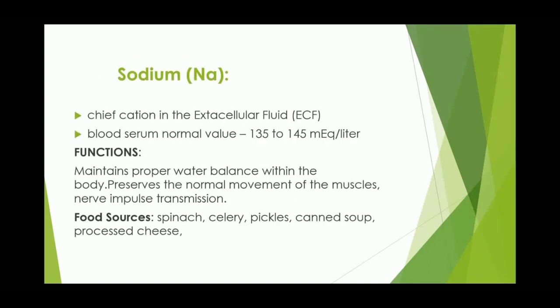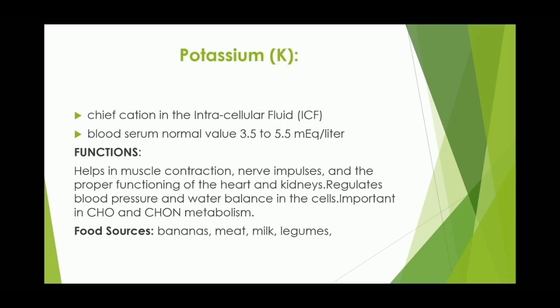Sodium: chief cation in the extracellular fluid. Blood serum normal value is 135–145 mEq/L. Functions: maintains proper water balance within the body, preserves normal movement of muscles, and nerve impulse transmission. Food sources: spinach, celery, pickles, canned soup, and processed cheese. Potassium: chief cation in the intracellular fluid. Blood serum normal value is 3.5–5.5 mEq/L. Functions: helps in muscle contraction, nerve impulses, and proper functioning of the heart and kidneys; regulates blood pressure and water balance in cells; important in carbohydrate metabolism. Food source: bananas, meat, milk, and legumes.